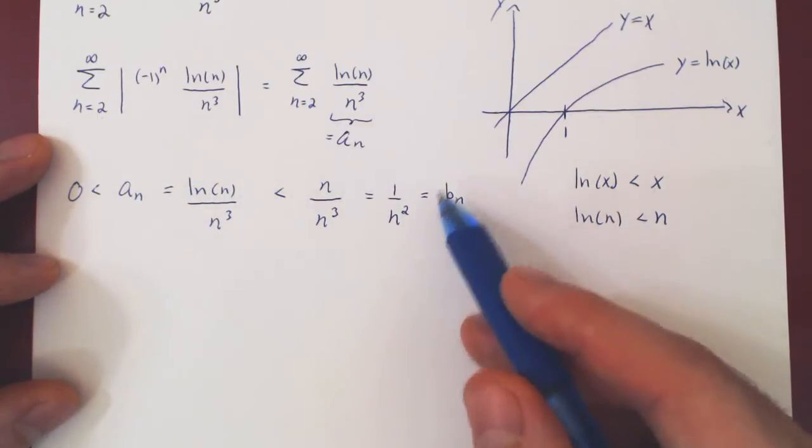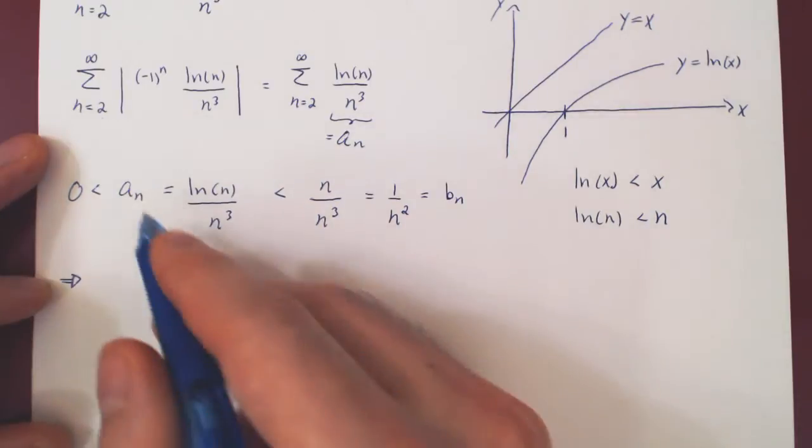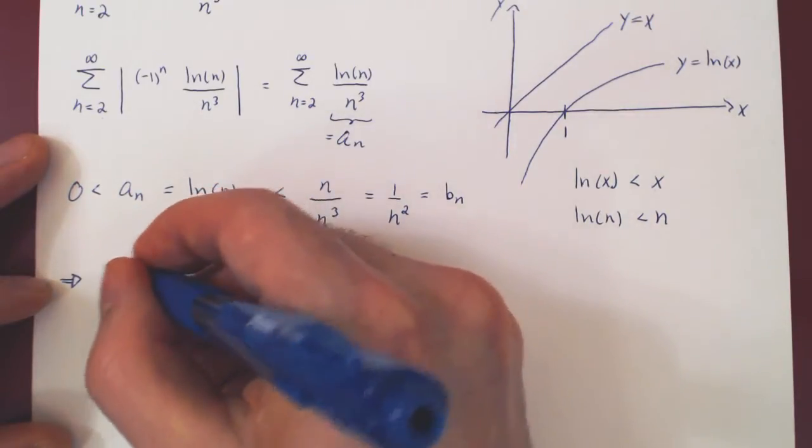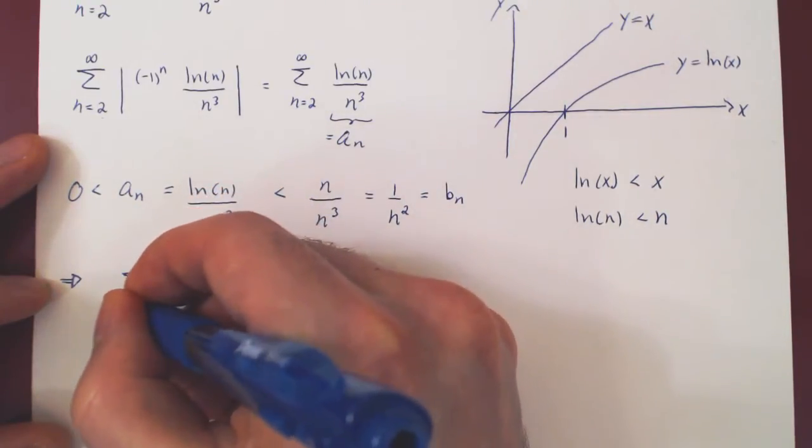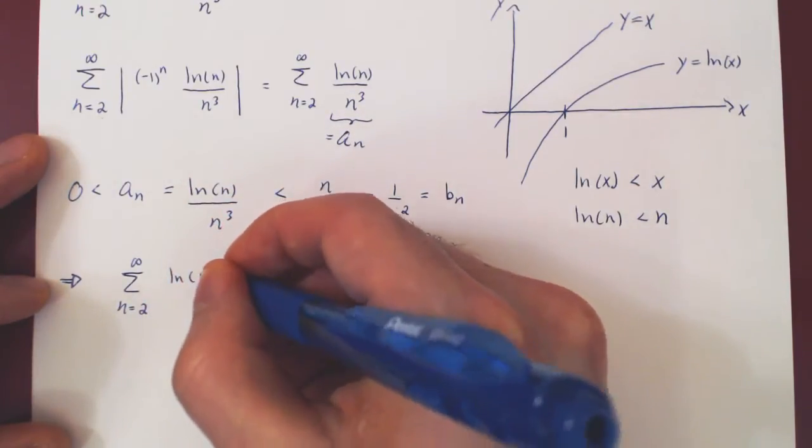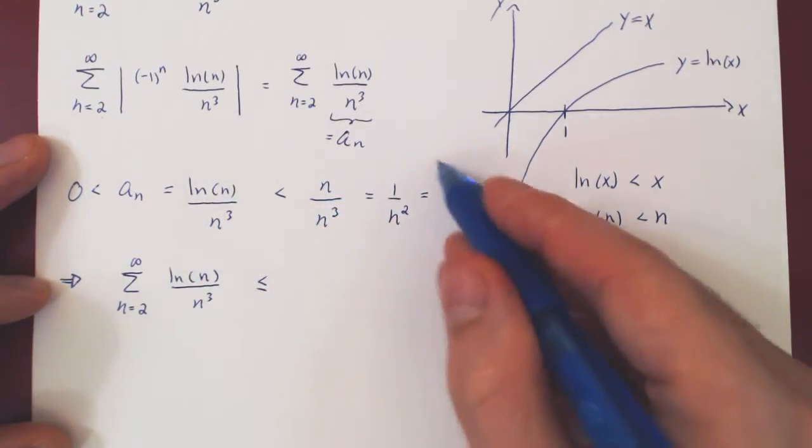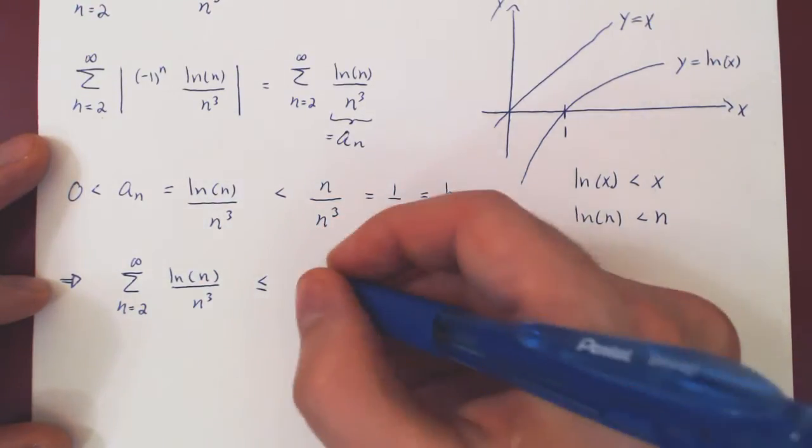So if a n is less than bn for every n, then summing the smaller terms, from 2 to infinity, so ln of n over n cubed, will be at most summing the larger terms, 1 over n squared.